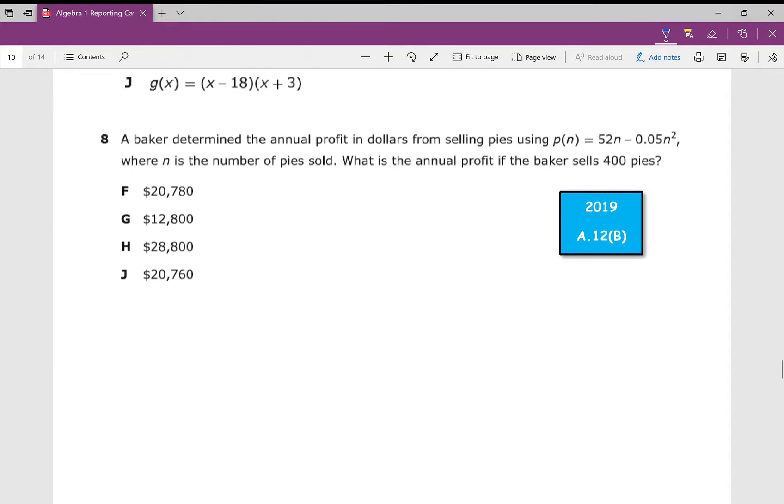Number eight: A baker determined the annual profit in dollars from selling pies using p(n) = 52n - 0.05n², where n is the number of pies sold. What is the annual profit if the baker sells 400 pies? It's a word problem. Mark it up. Anytime you see p(n), that's fancy schmancy for y. f(x), p(n), g(x), that's fancy schmancy for y. If you see that, you can replace it with y. If you see y equals in your word problem, you can plug it into y equals. So y = 52x - 0.05x².